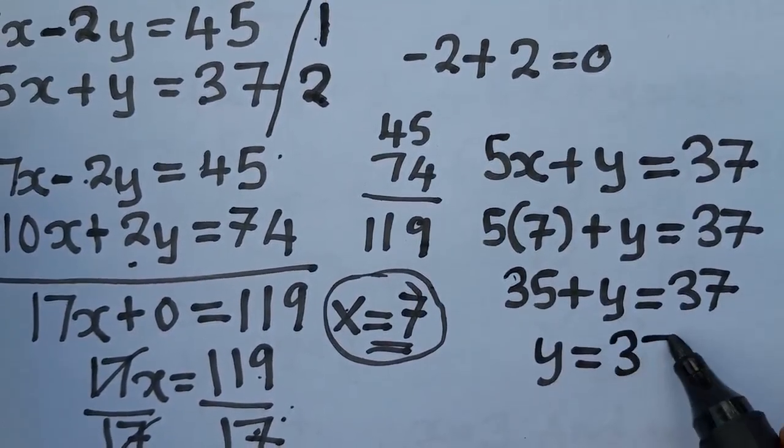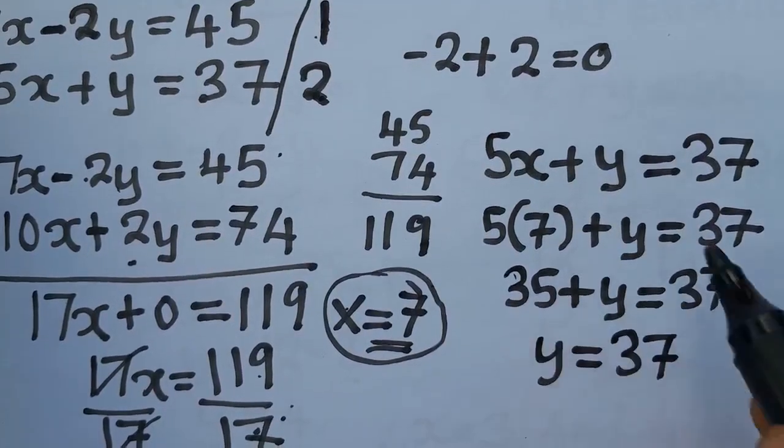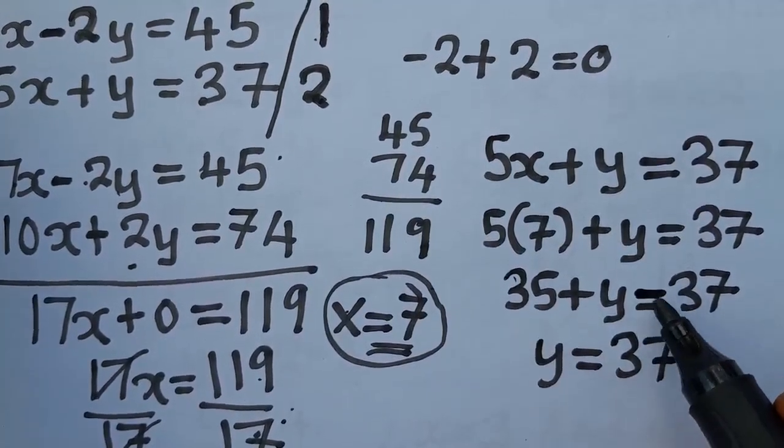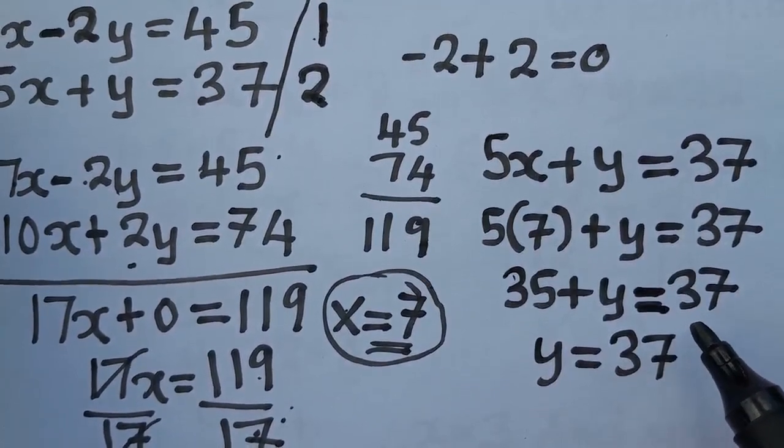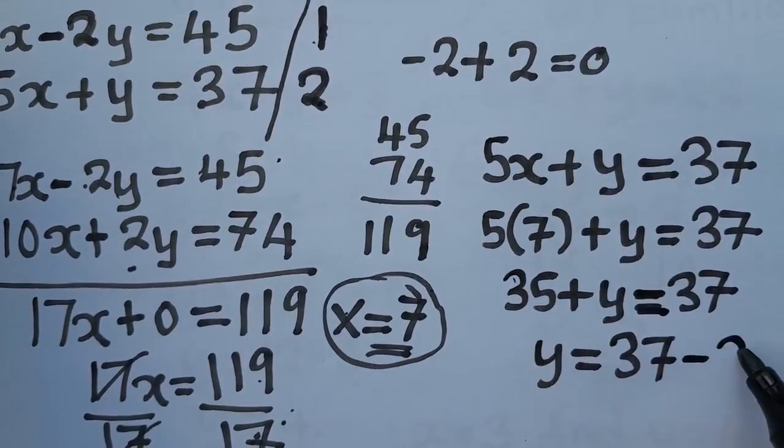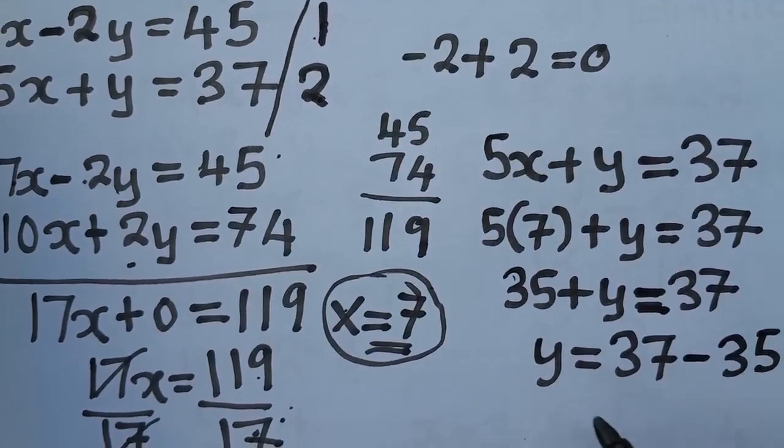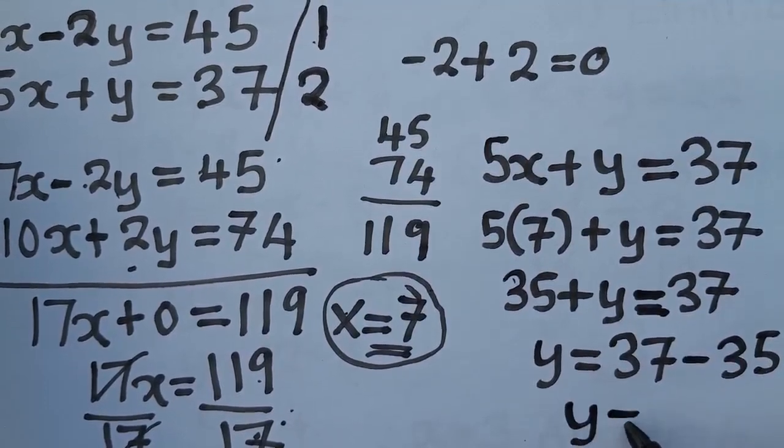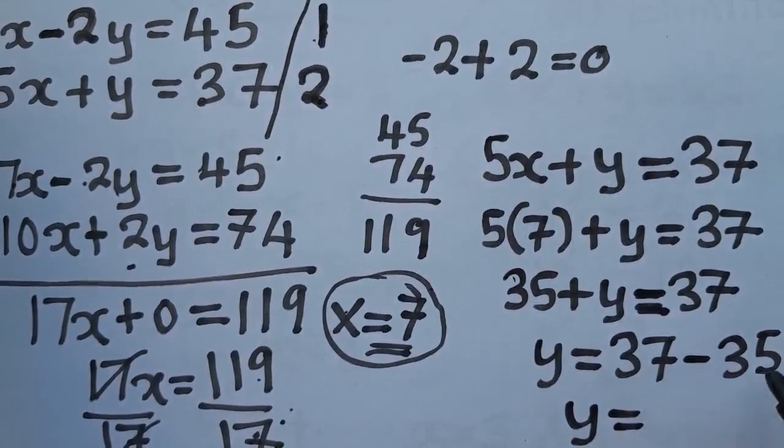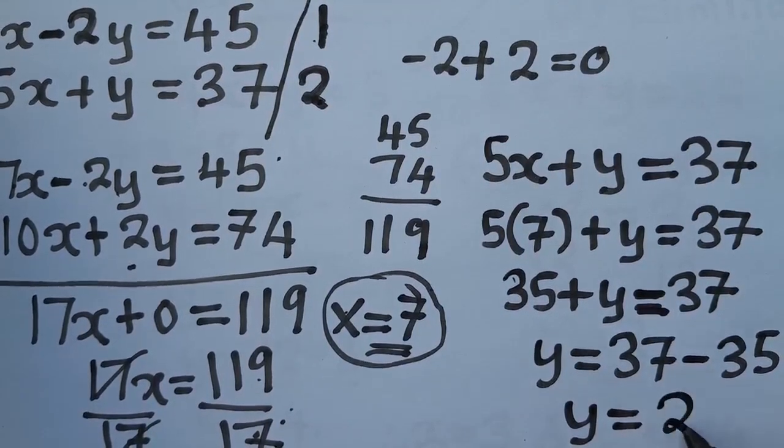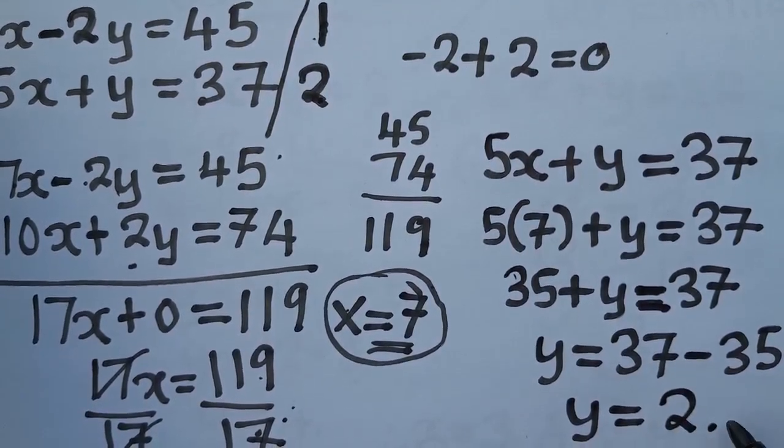This is 37. When this one comes this other side, since it is crossing this equal to sign, meaning the sign is going to change. It's going to be negative 35 like that. Meaning y is equal to, what is 37 minus 35? It is 2.